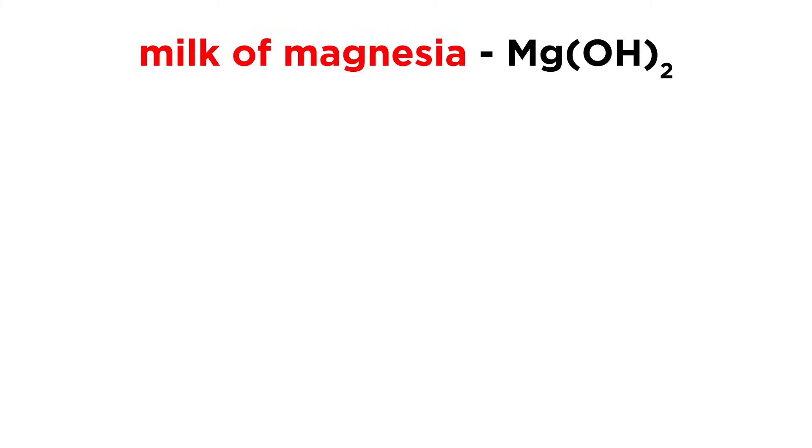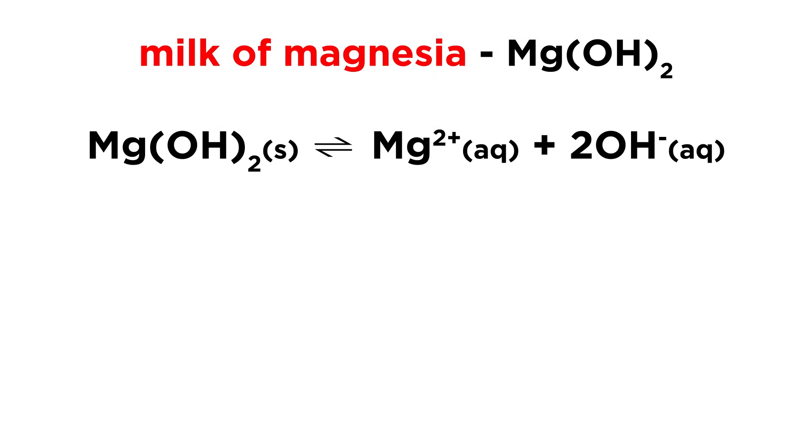Let's say we have a saturated solution of milk of magnesia, which is magnesium hydroxide. This is slightly soluble and dissolves according to the following equilibrium. Say we measure the resulting magnesium ion concentration as being 3.7 times 10 to the negative 5 molar. What will be the solubility product for magnesium hydroxide?